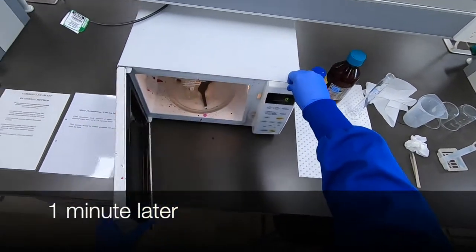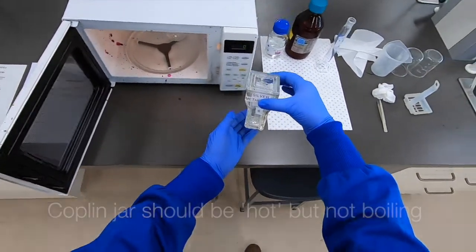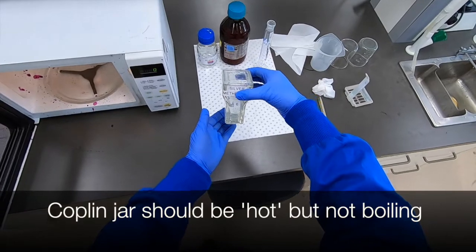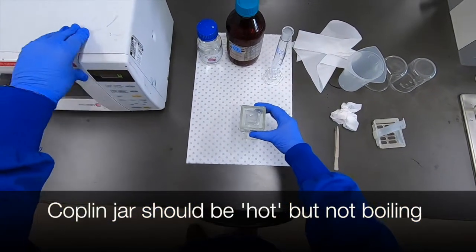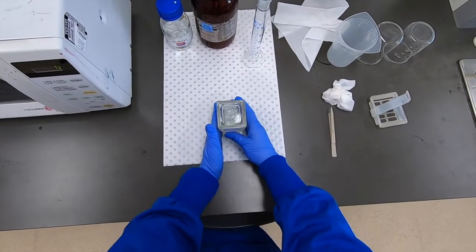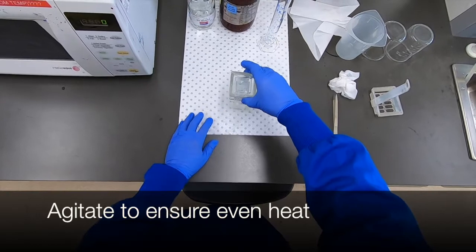So after about a minute on high, we then remove the Coplin jar, being careful in case it's hot. But the Coplin jar should be hot and not boiling, that's what you're aiming for. And you can check the temperature by just briefly touching the outsides and you're looking for that to feel warm.